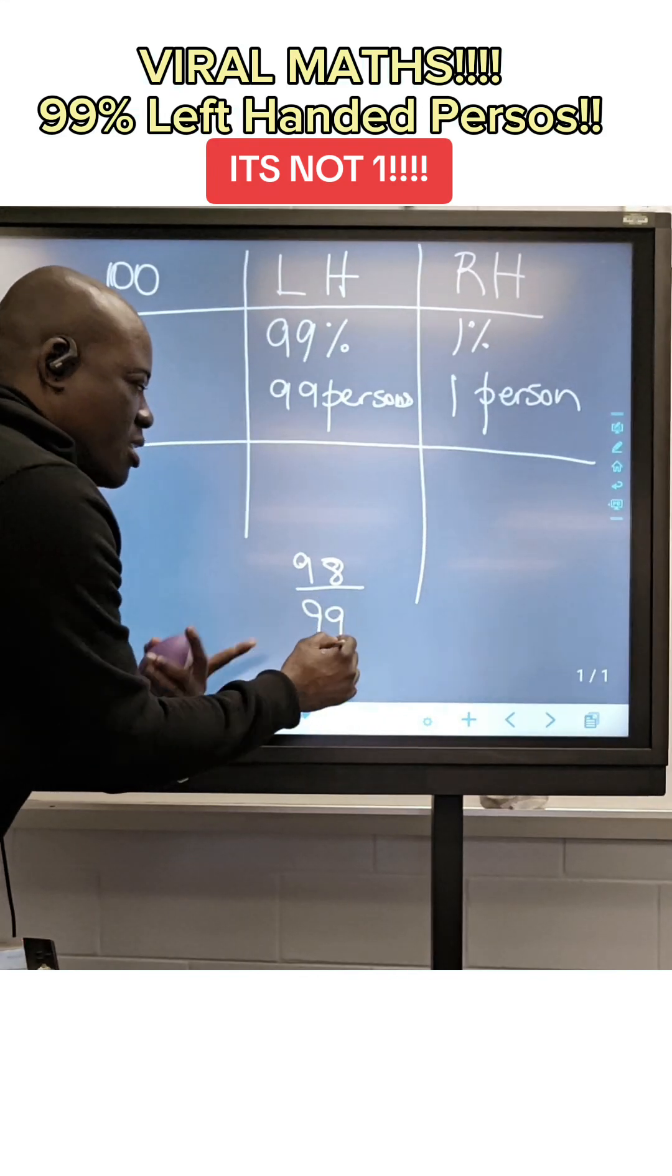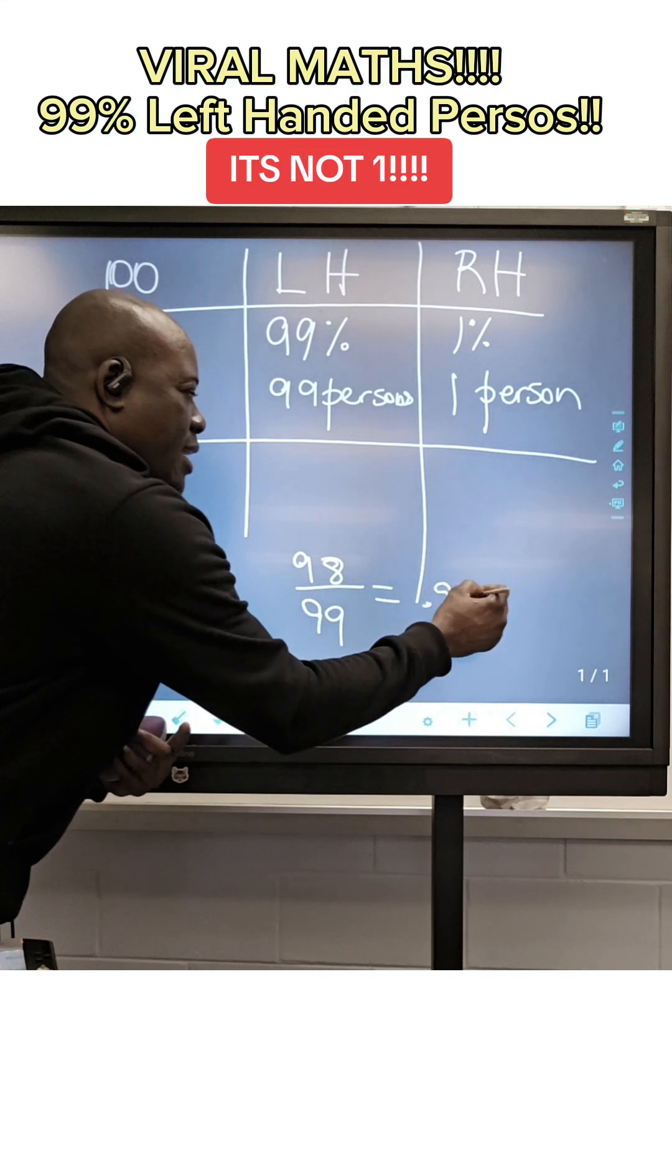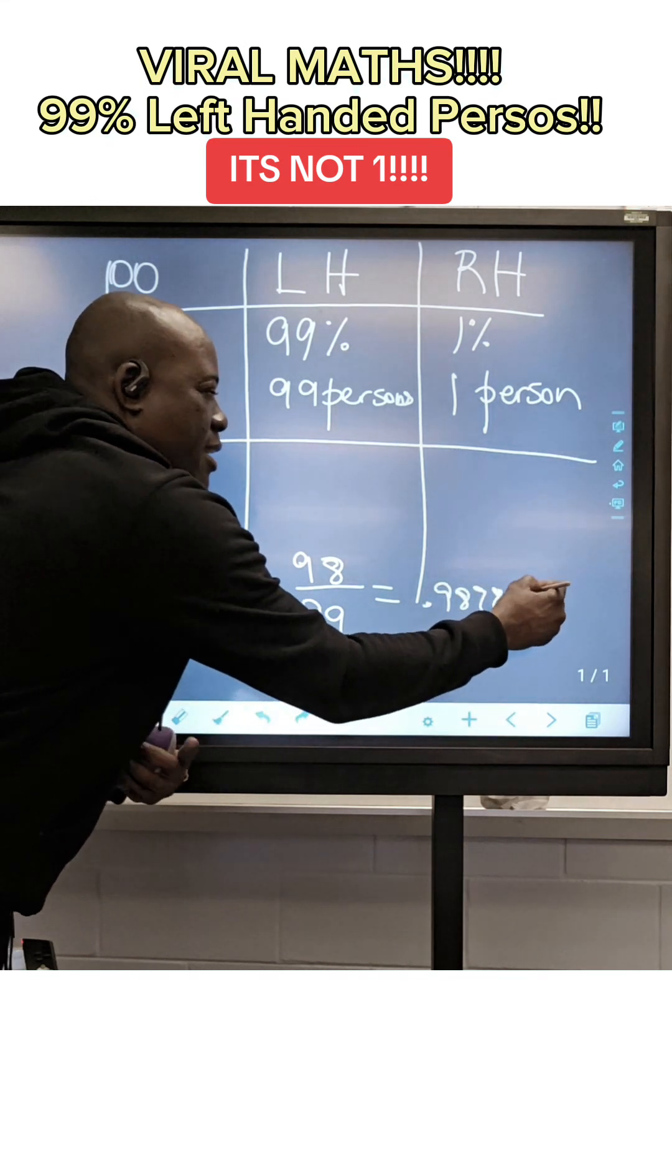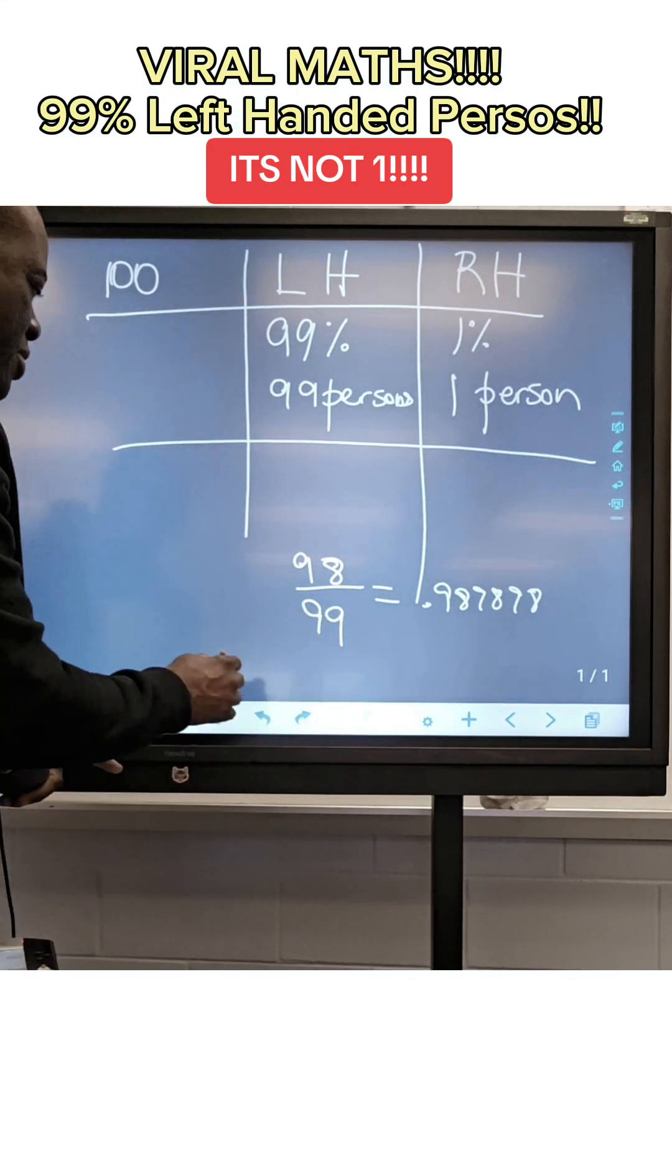So if you work this out, you're going to get 98, 98, 98. So that's almost 99%. So that's not it.